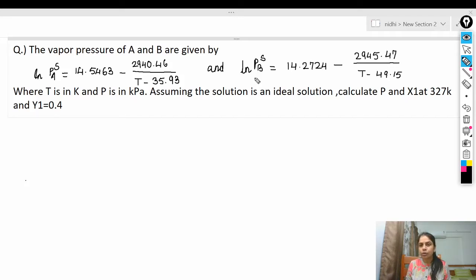Assuming the solution is an ideal solution, calculate pressure and x1. We need to find out two things: total pressure and mole fraction in liquid phase of component A at 327 Kelvin and Y1 which is 0.4. So T is given as 327 Kelvin and vapor phase mole fraction Y_A or Y1 is 0.4.